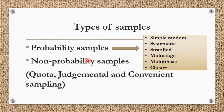For all scientific purposes, probability samples are more accurate because they are based on randomization, and there are fewer chances of bias.